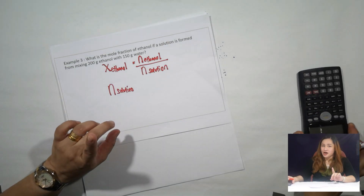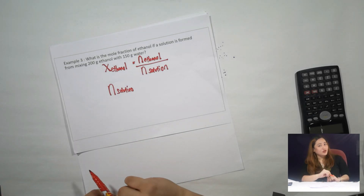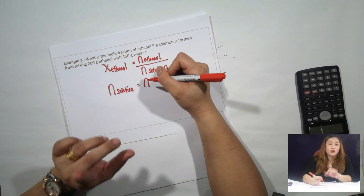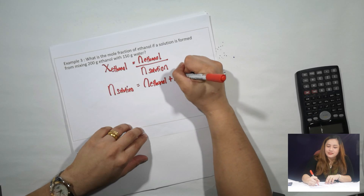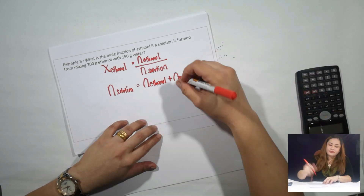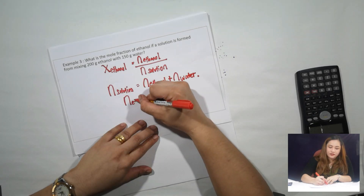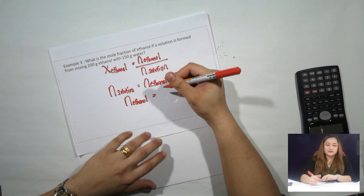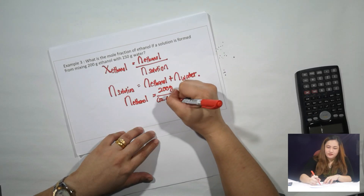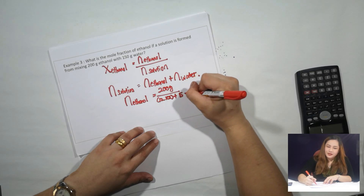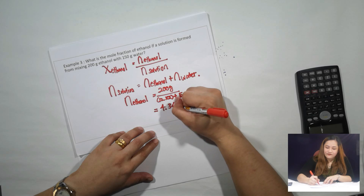Your solution is made up from ethanol, which is your solute, and water, which is your solvent. So the number of mol of solution is the number of mol of solute — ethanol — plus the number of mol of your solvent, which is water. I've already calculated the number of mol of ethanol: it is equal to mass over molar mass. The mass given is 200 grams. The molar mass for ethanol is 12×2 + 1×5 + 16 + 1. So the number of mol of ethanol is equal to 4.345 mol.